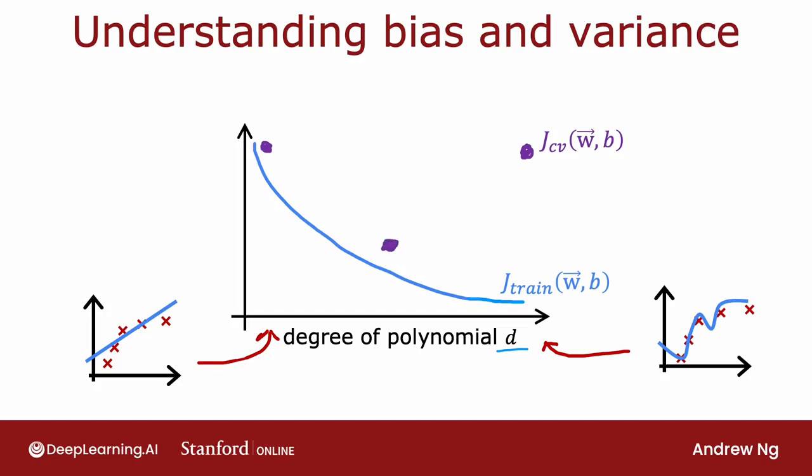But if D was in between — say a second-order polynomial — it actually did much better. If you vary the degree of polynomial, you get a curve that comes down and then goes back up. If the degree of polynomial is too low, it underfits and doesn't do well on the cross-validation set. If it is too high, it overfits and also doesn't do well. It's only somewhere in the middle that it's just right — which is why the second-order polynomial ends up with a lower cross-validation error and neither high bias nor high variance.